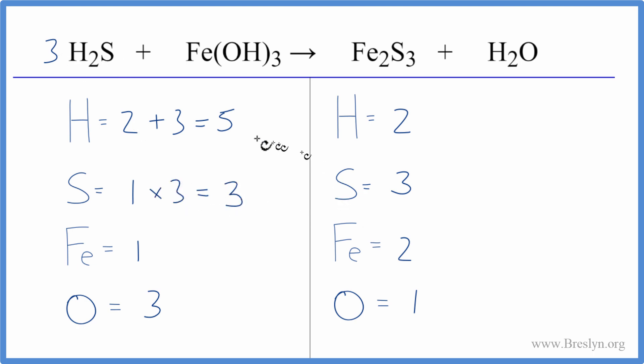that would balance the sulfurs. So now let's update the hydrogens, because we have two times three, that's six, plus three times the one, three of those there. So now we have nine hydrogen atoms.